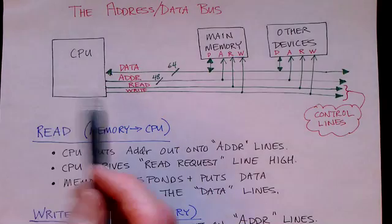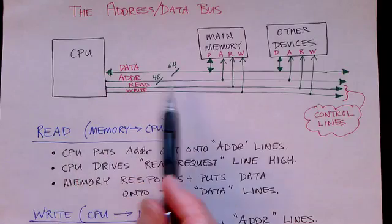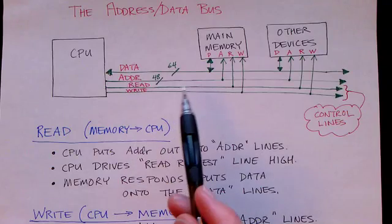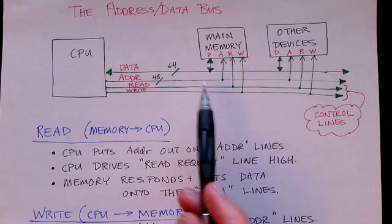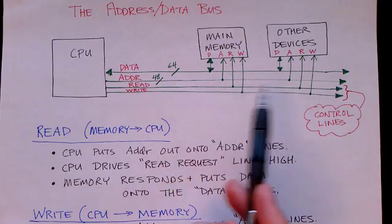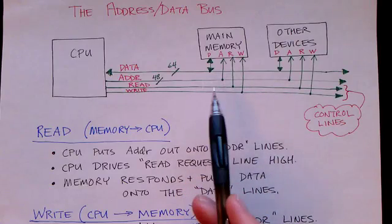Let me talk a little bit about how the CPU communicates with main memory. The communication is done over buses, and a bus is really nothing more than a set of wires of parallel wires that are carrying data and control signals.